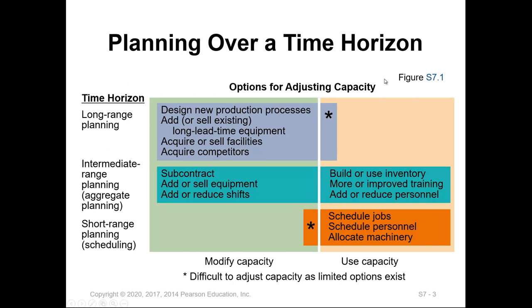To meet the required capacity, the organization has three options: long-term or long-range planning, intermediate-term planning, and short-term or short-range planning.